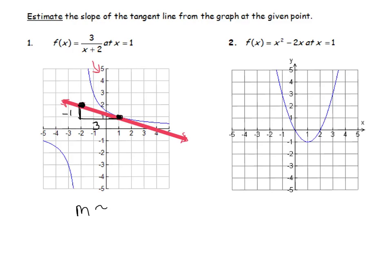So my change in y looks like I'm going down 1, and my change in x is up 3. So it looks like the slope is about equal to... so the slope of that tangent line is about equal to negative one-third.